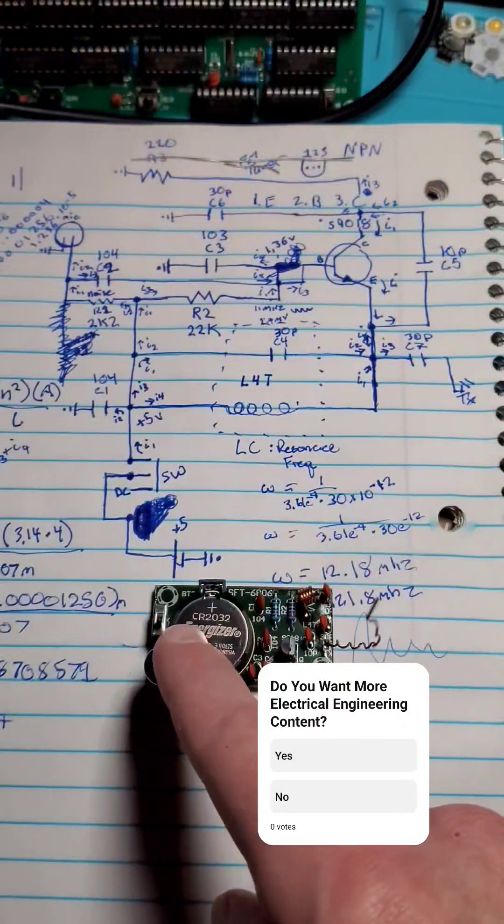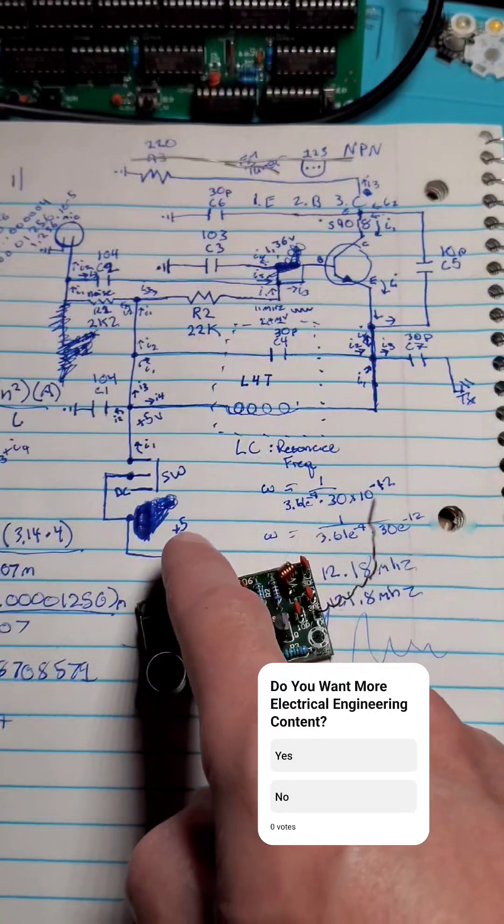A CR2032 3V coin battery supplies power.